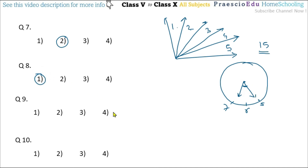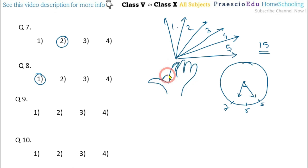Question number 9: what is the angle made between the stretched thumb and the index finger? When you stretch your thumb and index finger, the angle formed is somewhat more than 90 degrees. So this is an obtuse angle, and it is given in option number 3.